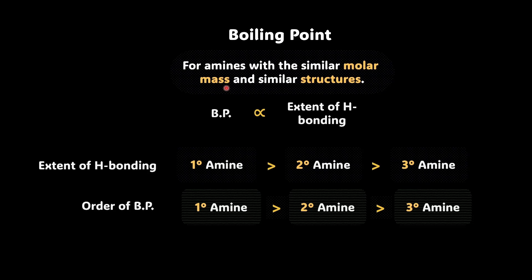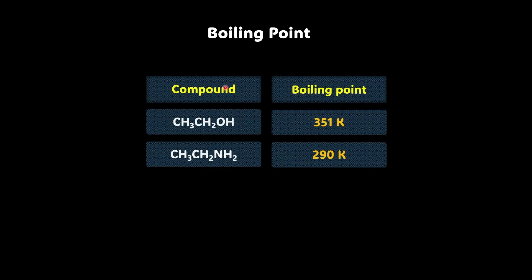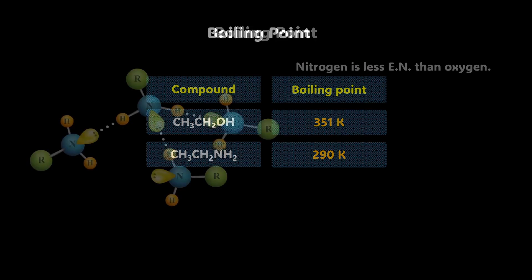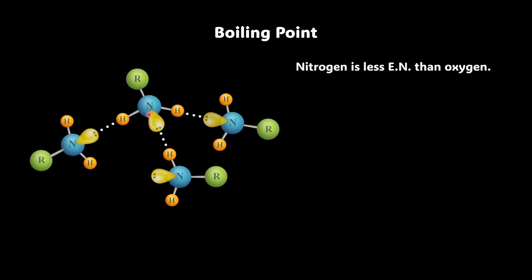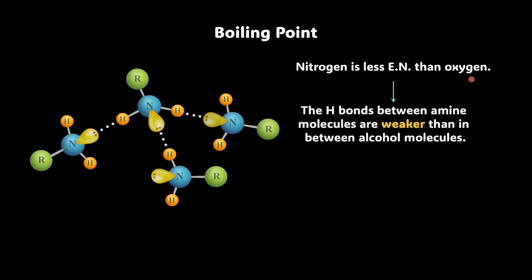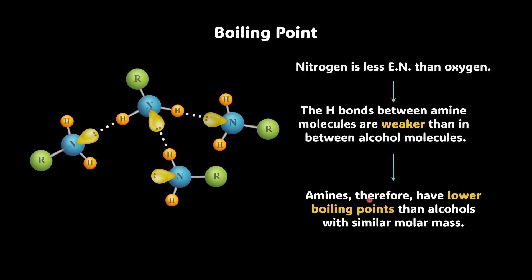Let's compare amines with alcohols. We have ethanol and ethanamine — both have two carbons. Both can show hydrogen bonding, but the boiling point of ethanol is 351 Kelvin and that of ethanamine is 290 Kelvin. The answer lies in electronegativity: nitrogen has lower electronegativity than oxygen, so the hydrogen bonds between amine molecules are weaker than between alcohol molecules. As a result, amines have lower boiling points than alcohols with similar molar mass.